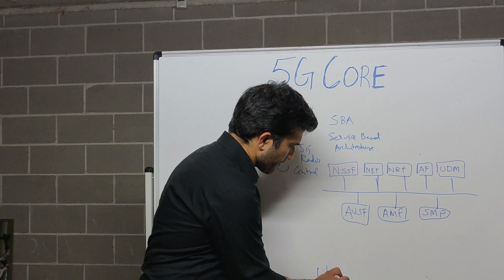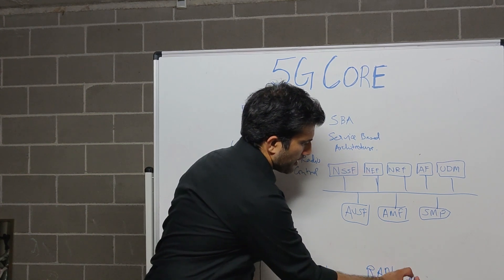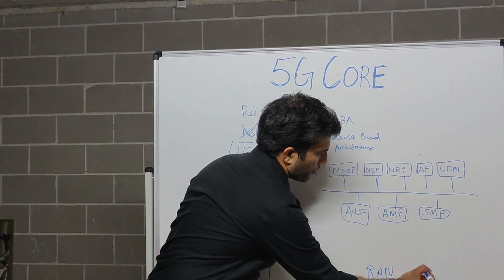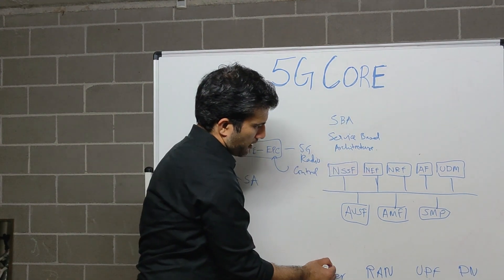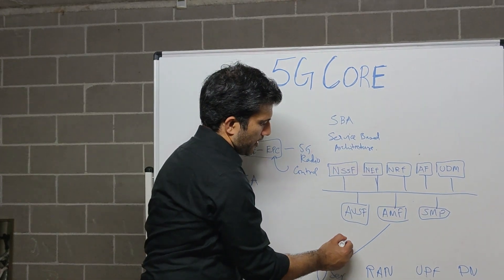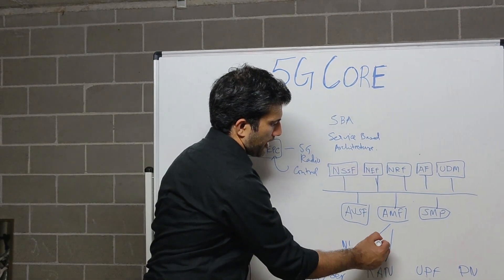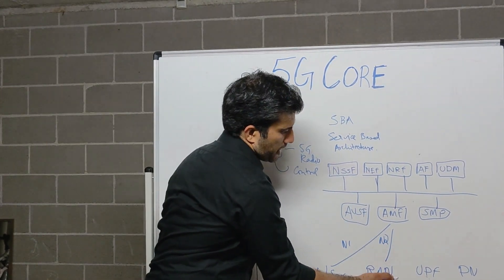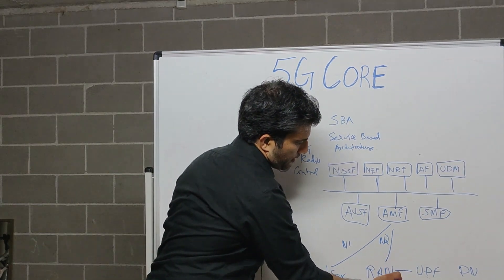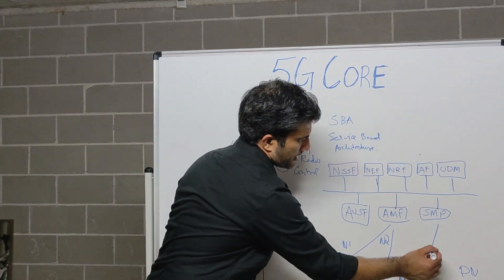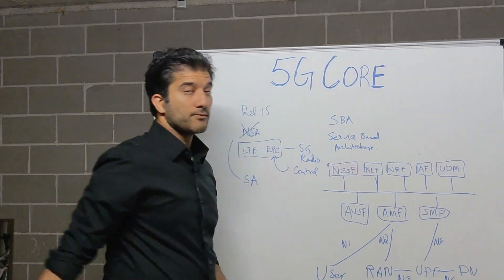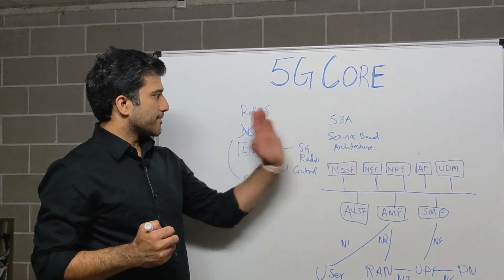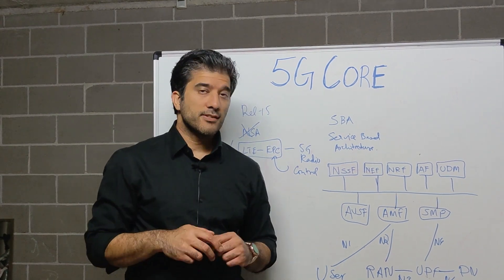And then you go on the user. So here is your user, here is your RAN, here is your UPF, and here is your data network. So this will be your N1, this is your N2, and I think this was N3, this is N4, and this is N6. So this is the main part which is service based architecture.